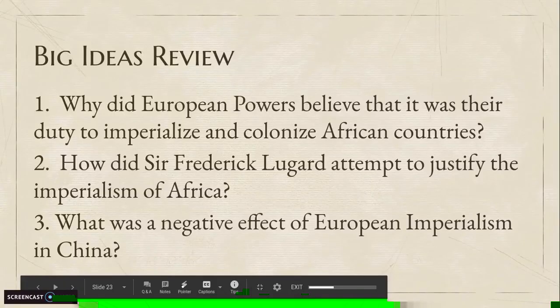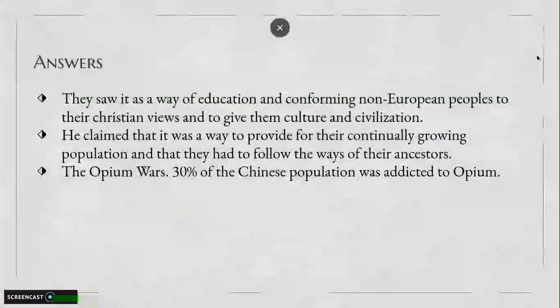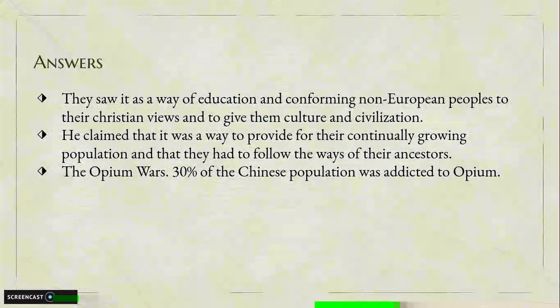Big Ideas Review: Why did the European powers believe it was their duty to imperialize and colonize African countries? How did Sir Frederick Lugard attempt to justify the imperialism of Africa? What was the negative effect of European imperialism in China? Answers: Number one — they saw it as a way of educating and conforming non-European peoples to their Christian views and giving them culture and civilization. Number two — he claimed it was a way to provide for the continually growing population and that they had to follow the ways of their ancestors. Number three — the Opium Wars; 30% of the Chinese population was addicted to opium.